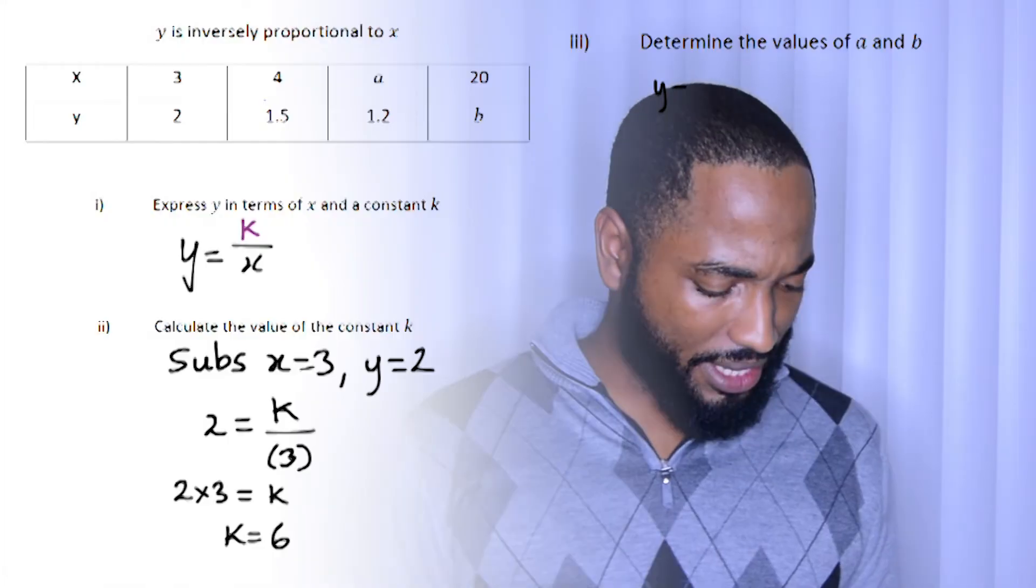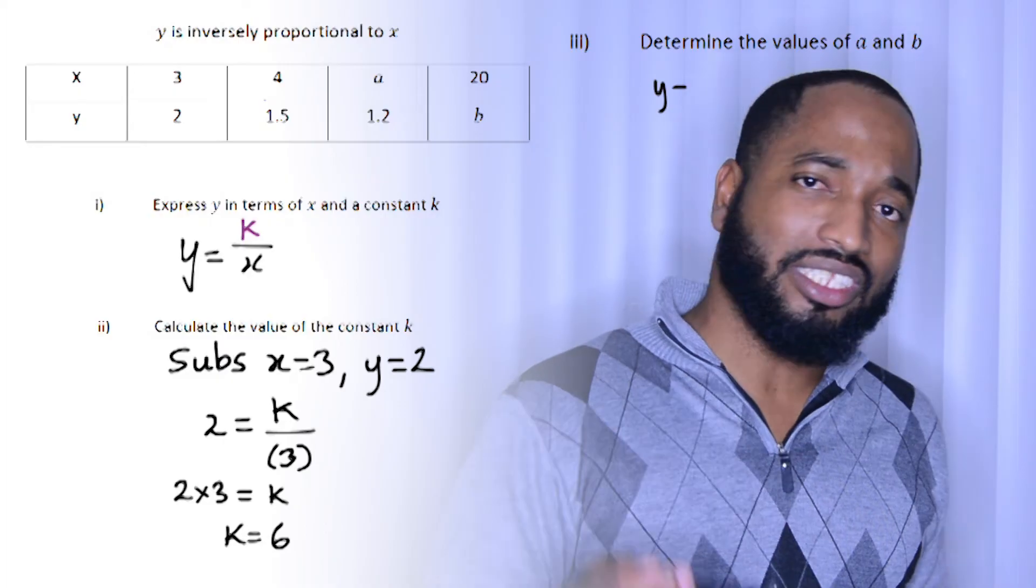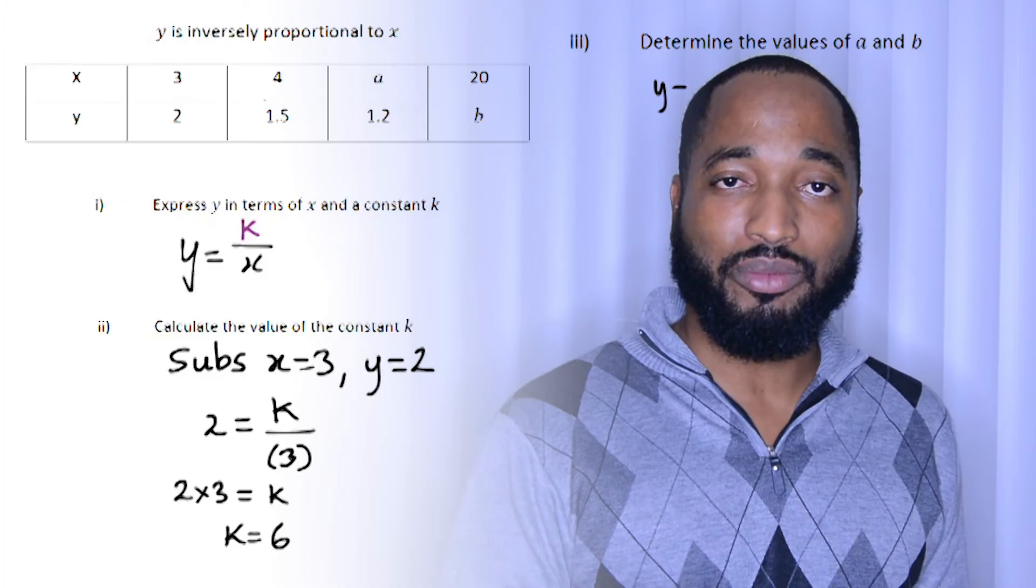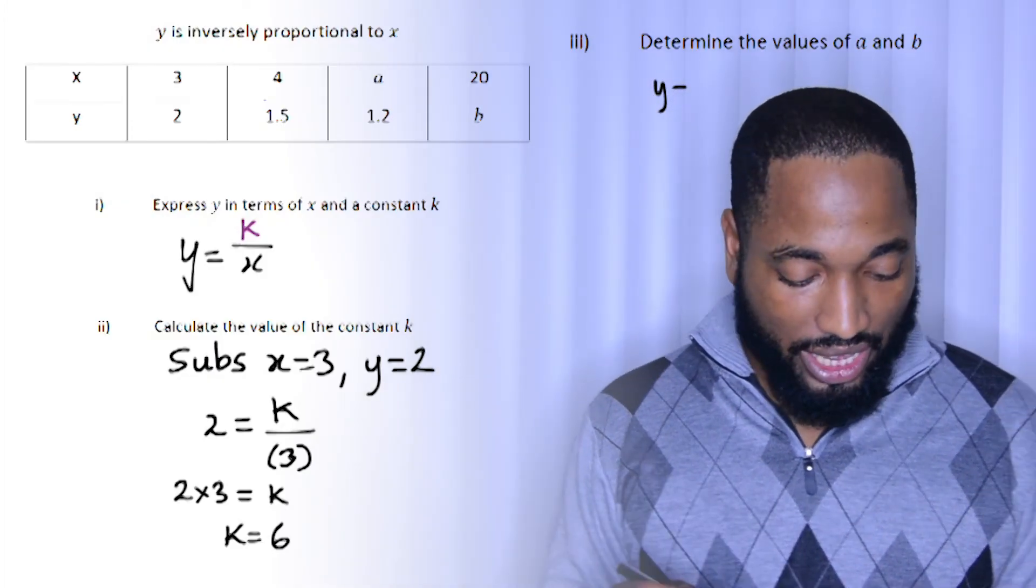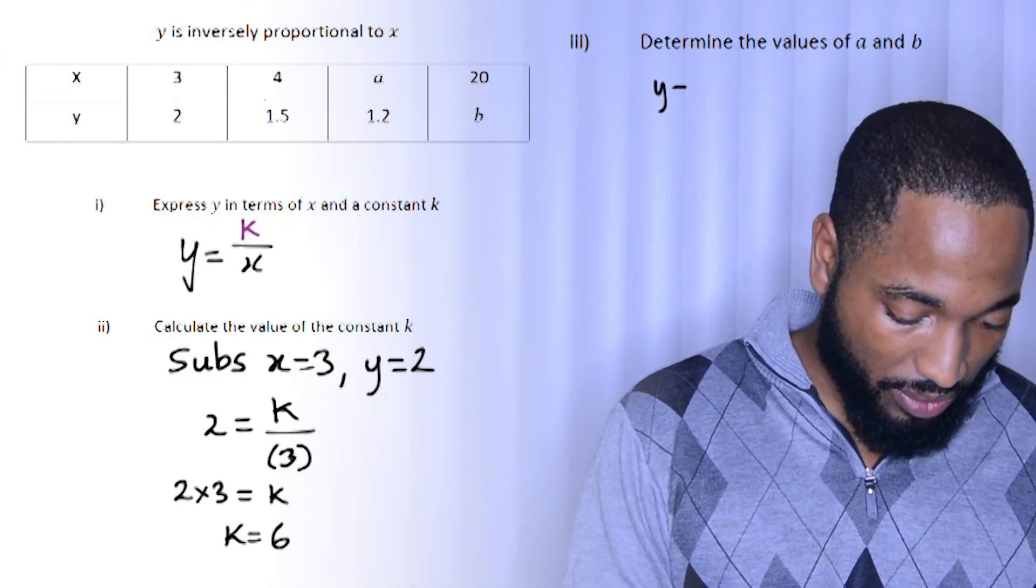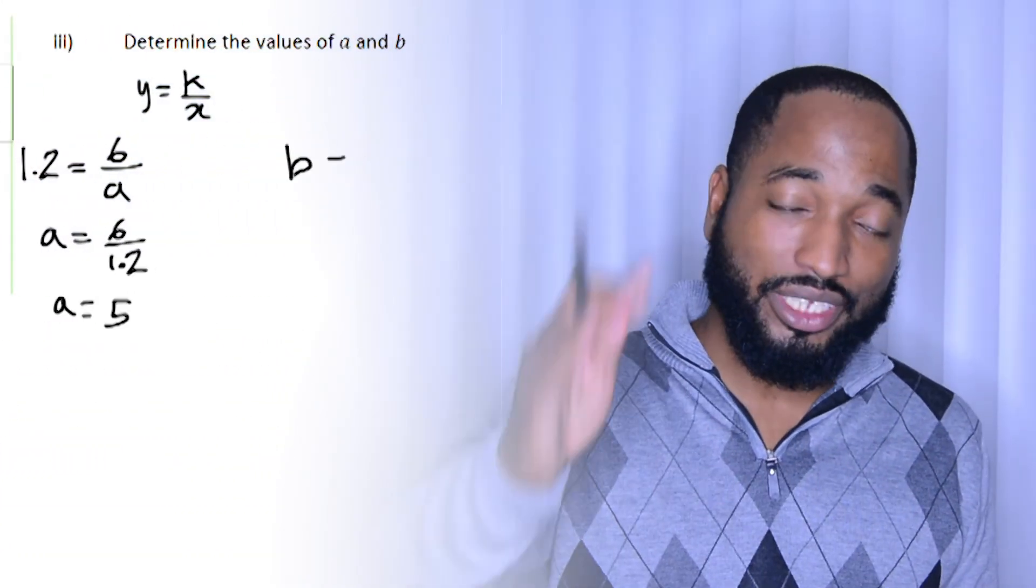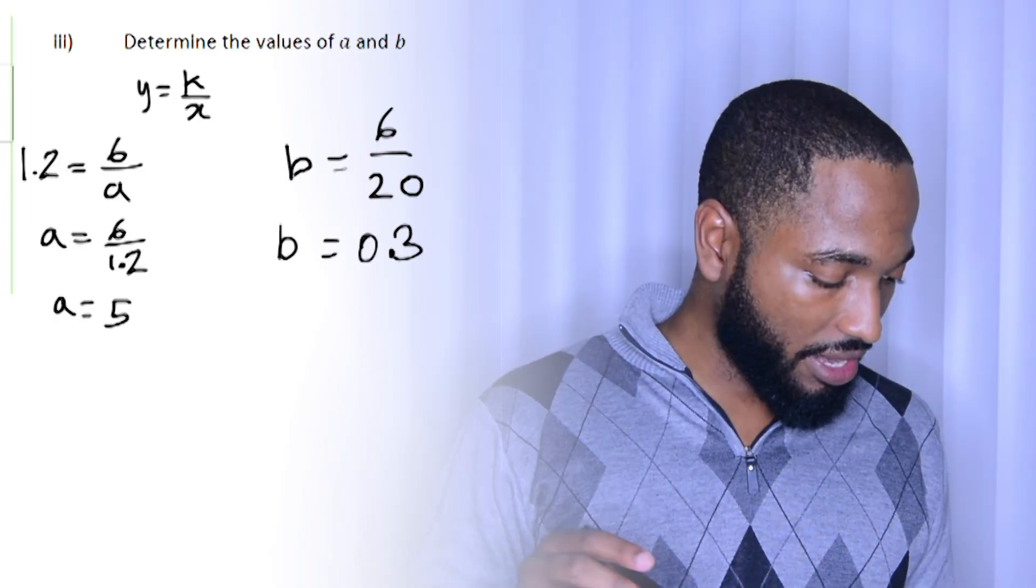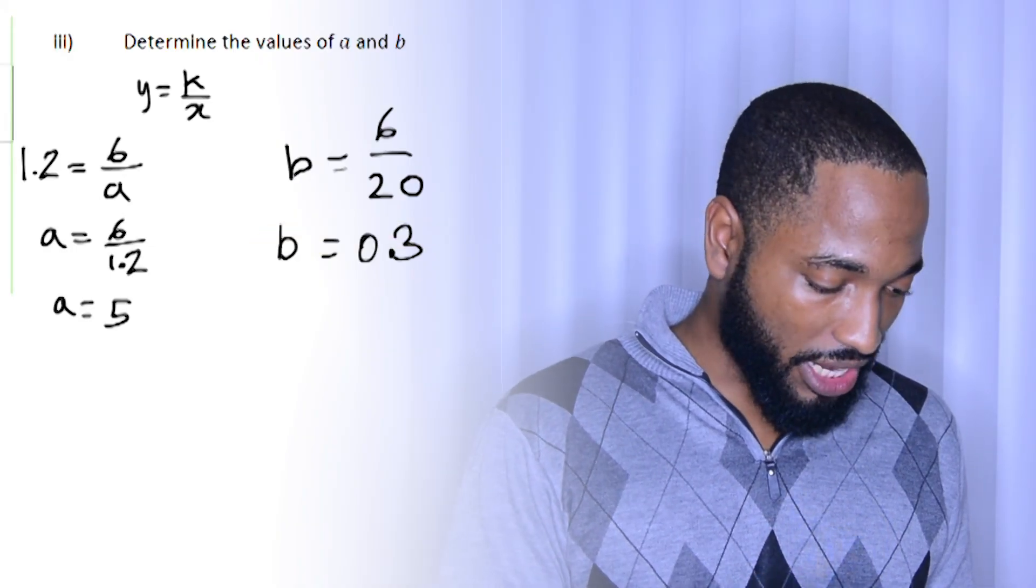Determine the values of a and b. So once again, you can already see that this is just going to be some more substitution here into this equation. But this time we know the value of k. So when we substitute in, we substitute k and the y or k and the x. y is equal to k over x. If we substitute the y value and substitute the k value there, we'll get a is equal to 5 when we work that through. And if we substitute the k value and the x value, we get b is equal to 0.3. So that's how proportionality works.